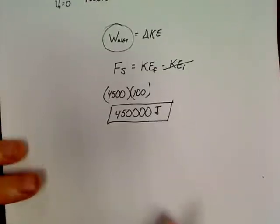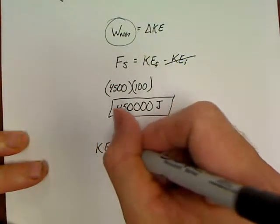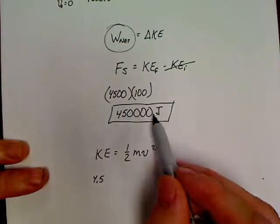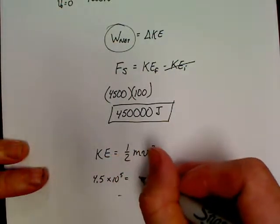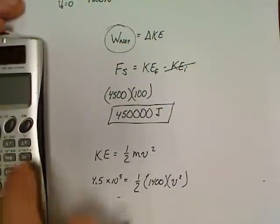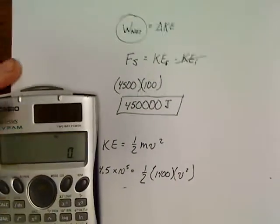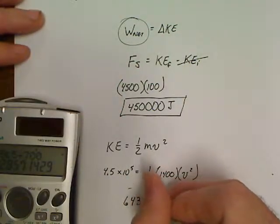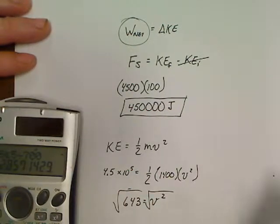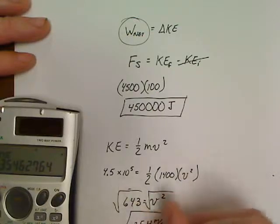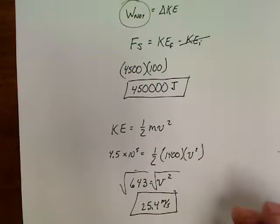Now, it asks us to find velocity. Well, that's not really a big deal either, because all we've got to do is know that kinetic energy is one-half mv square. So, we can come in here and just 4.5, what was that, times 10 to the 5? 4.5 times 10 to the 5 equals one-half, 1,400 times v square. Well, let's see what we've got here. So, this is going to be 4.5, 10 to the 5, divided by 700. And, of course, we need to, so that's 643, and that's equal to our v square. So, now let's take a square root of both sides of this. So, square root, 25.4. So, there is our final velocity, 25.4 meters per second.